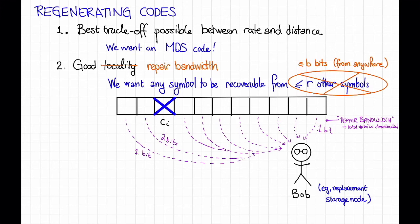So in this picture, Bob is contacting all of these other nodes, but he's downloading apparently only one bit from this one, two bits from this one, and so on. To be a little bit more formal here, we imagine that every symbol, every storage node, is allowed to do some local computation. That is, this symbol is allowed to compute some function of the data that it holds and send the output of that function to Bob.